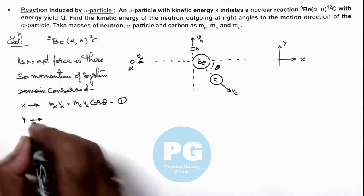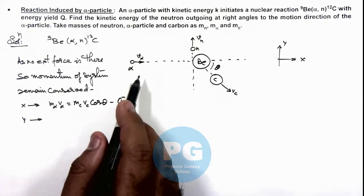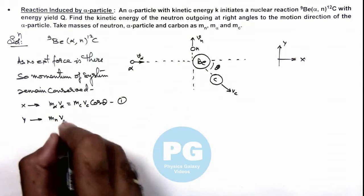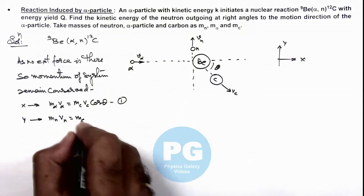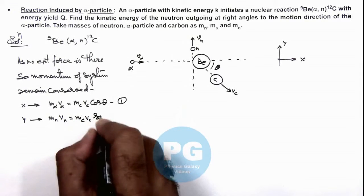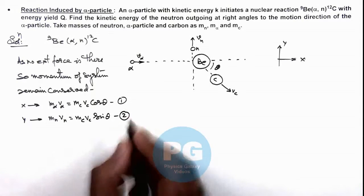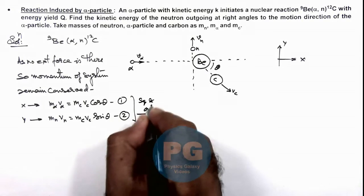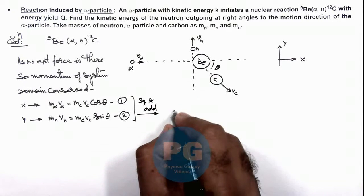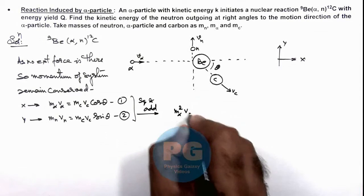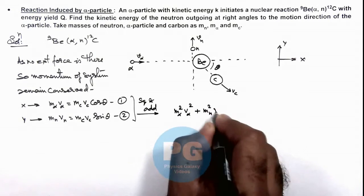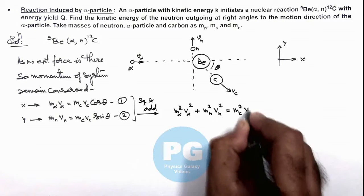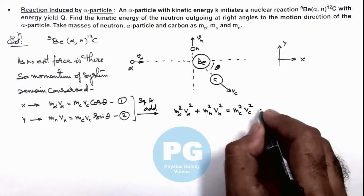In the y-direction, initially there was no momentum, so the final momentum must be zero. We can write m_n·v_n = m_c·v_c·sinθ as our second equation. Squaring and adding equations 1 and 2, we get: m_α²·v_α² + m_n²·v_n² = m_c²·v_c². This is our third equation.